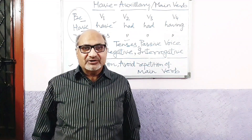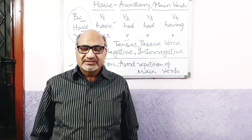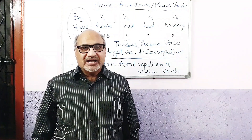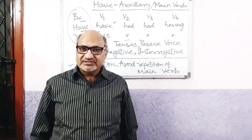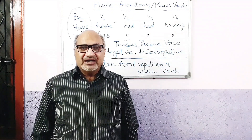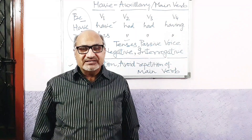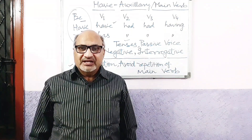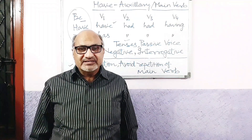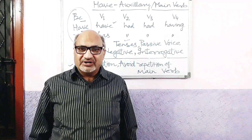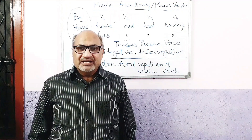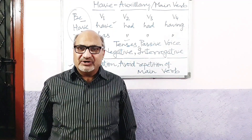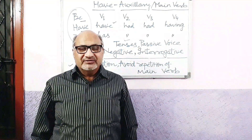Present perfect continuous examples: 'They have been writing a letter for two hours.' 'They haven't been writing a letter for two hours.' 'Have they been writing a letter for two hours?' 'Haven't they been writing a letter for two hours?'